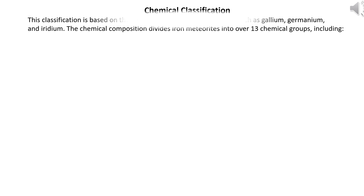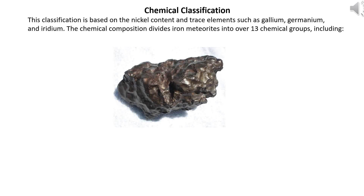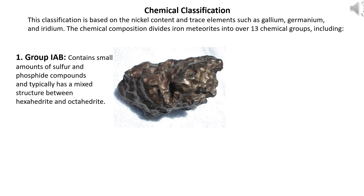Chemical classification: based on nickel content and trace elements such as gallium, germanium and iridium. The chemical composition divides iron meteorites into over 13 chemical groups, including Group IAB — contains small amounts of sulfur and phosphide compounds and typically has a mixed structure between hexahedrite and octahedrite.